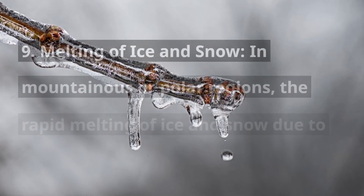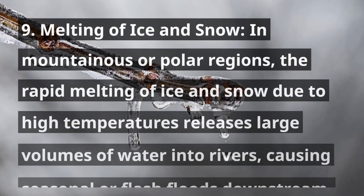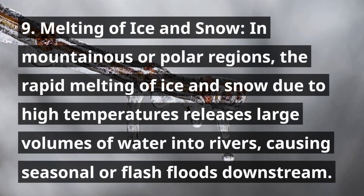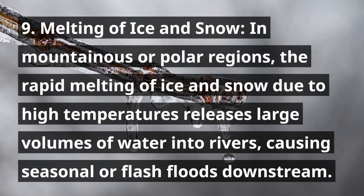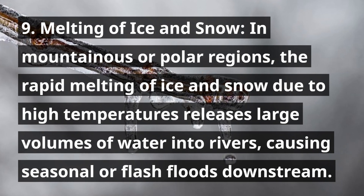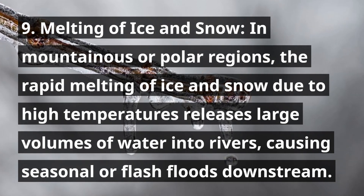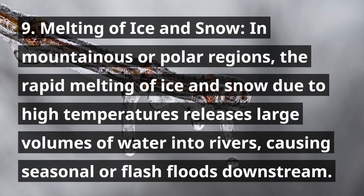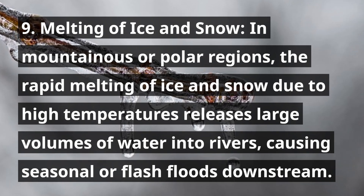9. Melting of Ice and Snow. In mountainous or polar regions, the rapid melting of ice and snow due to high temperatures releases large volumes of water into rivers, causing seasonal or flash floods downstream.